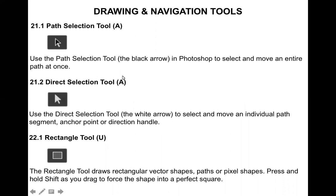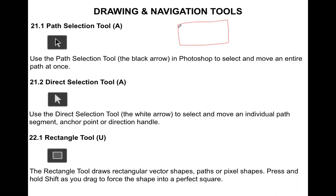Let's start with the first tool, called the Path Selection Tool. The Path Selection Tool is used to select or move the entire path in Photoshop. Suppose you have created a path, for example by using the Pen Tool. If you want to select, move, or copy it, then you can use the Path Selection Tool.